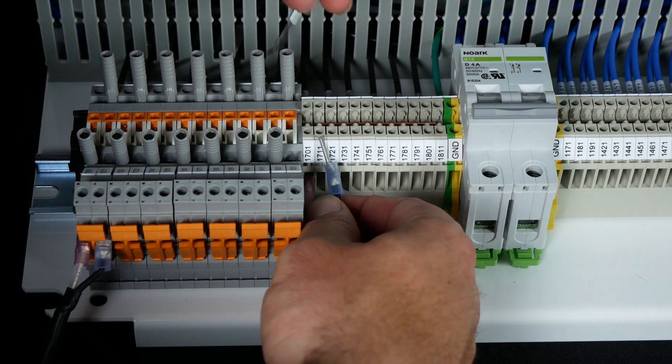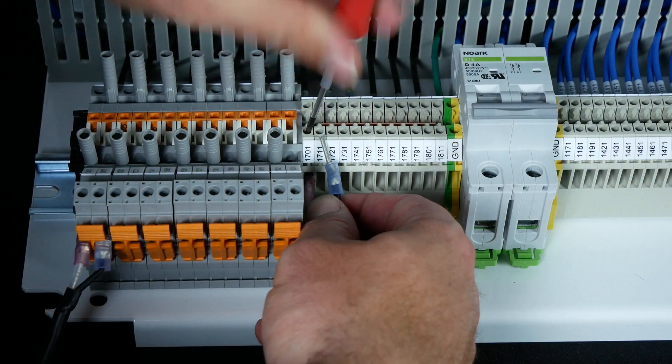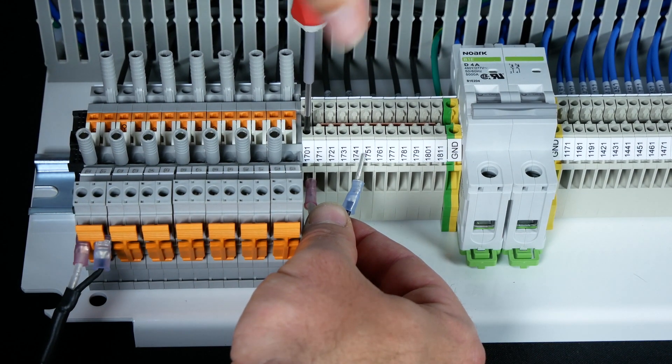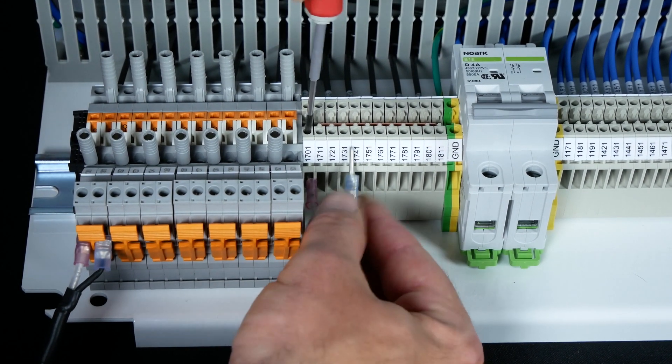For the Rogowski coils, identify the terminals you need to land on, insert the end, tighten the screw, and give it a tug test.